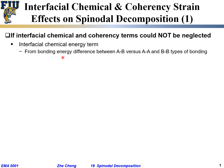As we mentioned in the interface section, the interfacial chemical energy term comes from the bonding of atoms to the wrong types of atoms — essentially the bonding between A and B atoms. The interfacial energy, no matter how similar A and B are, will be somewhat different from the bonding energy between A-A and B-B. As a result, there will be a related interfacial chemical energy term.